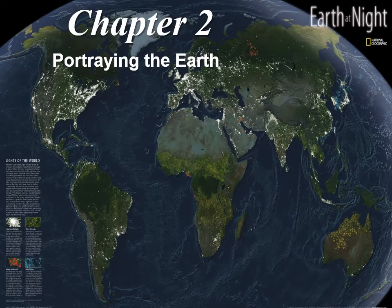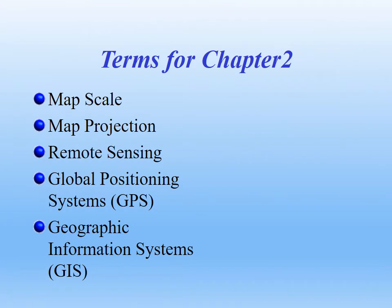Welcome to Chapter 2, Portraying the Earth. What you are seeing right now is Earth at night, and you can see a lot of different urban areas throughout this planet — and those urban areas are just continuing to grow. In this chapter, we're going to focus on some of the tools we use in geography to understand the Earth. We're going to look at maps and concepts related to maps like map scale, map projection. Then we're going to get into three primary types of technologies: remote sensing, global positioning systems, and geographic information systems.